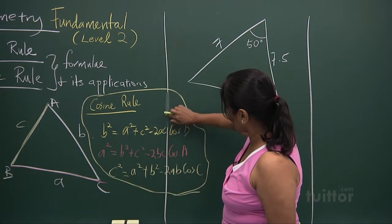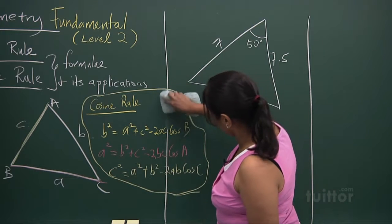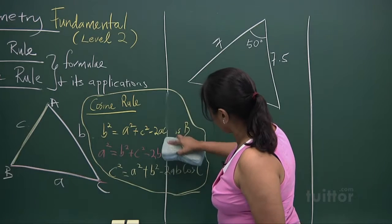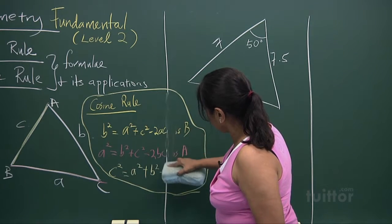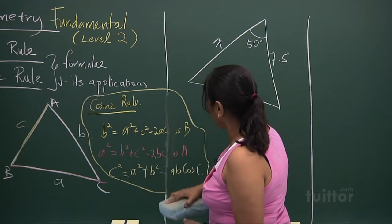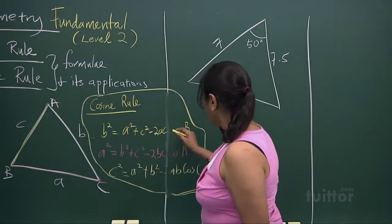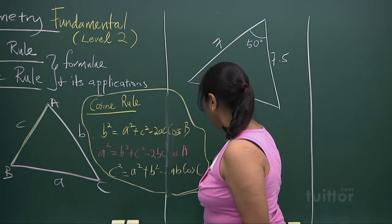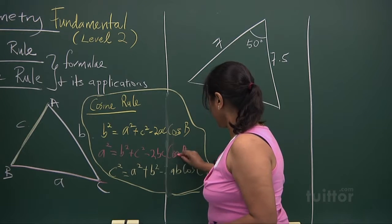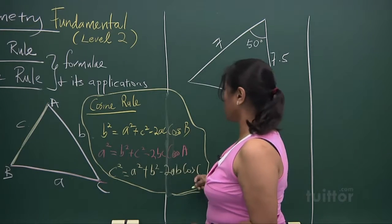Look at the formula — don't just memorize it mechanically, put a little rhythm into it. Two ac cos B, two bc cos A, and two ab cos C — that's the complete cosine rule package.